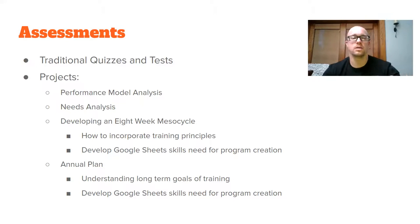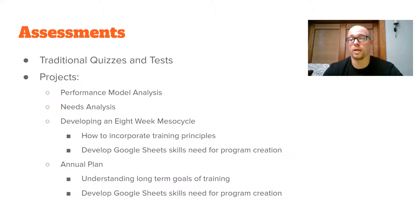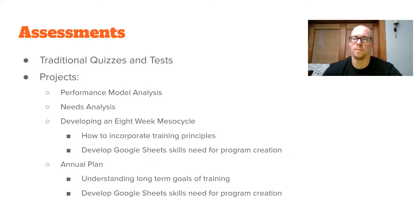In the needs analysis, you look at what sport the athlete is in — that's where the performance model comes in — and what state the athlete is currently at, so you can develop them and address their strengths and weaknesses. Then we build an actual training cycle: an eight-week meso cycle incorporating the principles from unit three. I also wanted to incorporate the skill of using Google Sheets to create programs. For the annual plan project, students take those training principles from short meso cycles and micro cycles and build them into a full annual training plan, again using Google Sheets to organize everything.